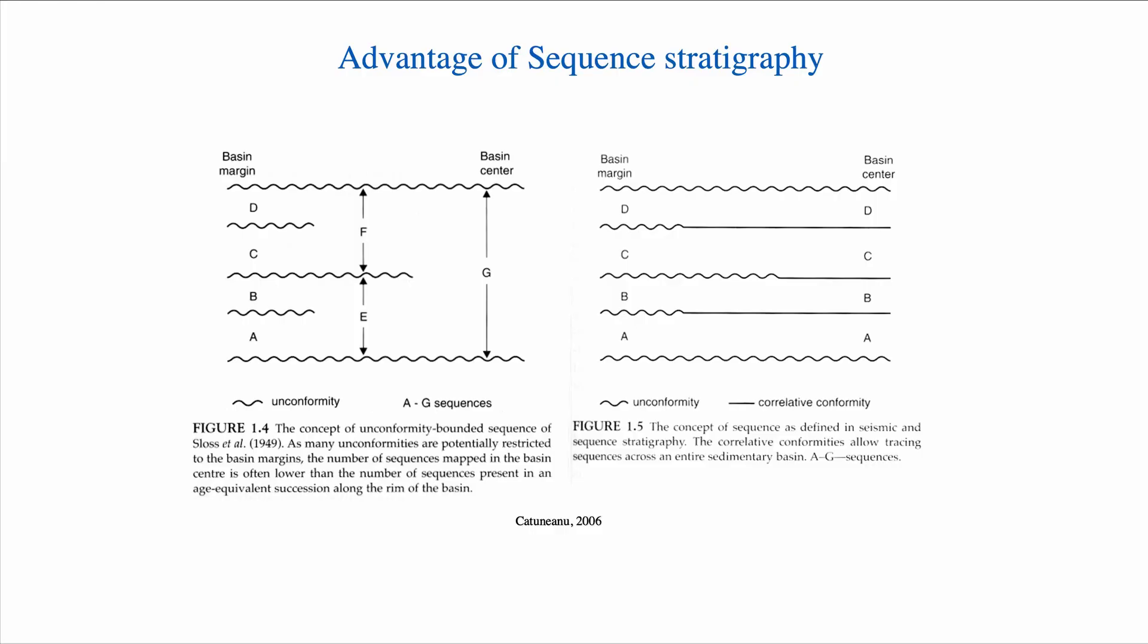So what's the difference then between a sequence stratigraphic unit and an allostratigraphic unit? I've already hinted at it, but let's take a closer look. So on the left here, I have a subdivision of a basin margin to basin center using allostratigraphic units. And on the right, using sequence stratigraphic units.